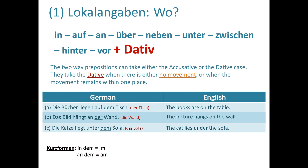In the second example: 'Das Bild hängt an der Wand.' Here 'die Wand' is feminine, and in the dative case feminine 'die' becomes 'der.' So 'das Bild hängt an der Wand' — the picture hangs on the wall. And: 'Die Katze liegt unter dem Sofa' — the cat lies under the sofa.